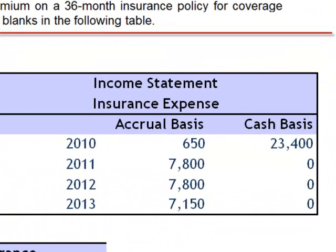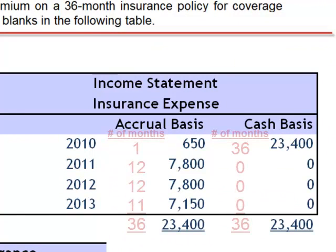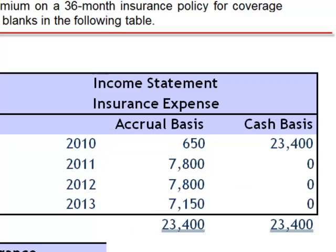It's important to recognize that regardless of the method chosen, total insurance expense over the 36 months is $23,400. The accrual basis, however, is an accurate reflection of the necessary cost to generate revenues in each of those years. That's why the accrual basis is used for generally accepted accounting principles.